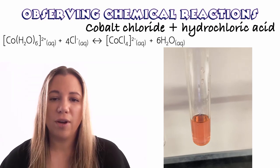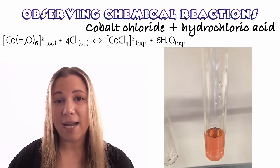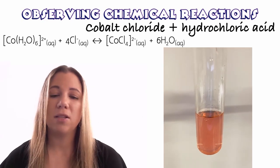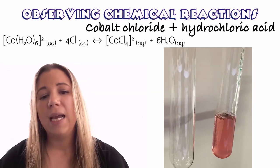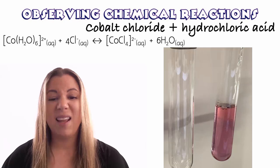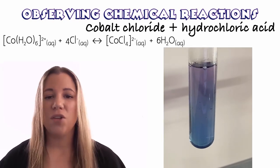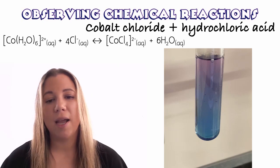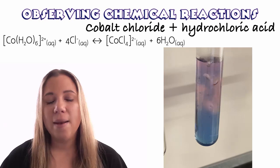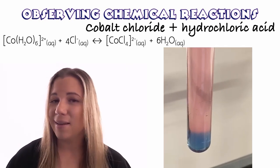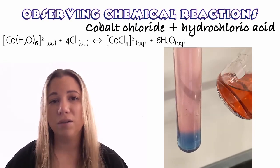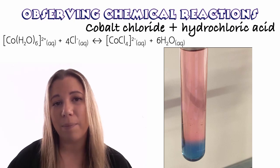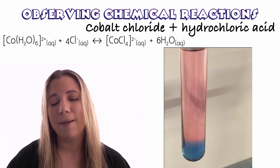Onto cobalt chloride and hydrochloric acid. Before reacting, the cobalt chloride solution is a really nice pink color and it's transparent — that's because of the complex ion formed between the cobalt and the water molecules. Hydrochloric acid before reacting is a clear liquid. After reacting, you can see a color change to a blue, still transparent color — that's because the cobalt has now formed a complex ion with the chloride ions from the hydrochloric acid. When we added more water, the color returns to more of a pink color — so the reaction has been reversed, with the cobalt now forming a complex ion with the water molecules again.